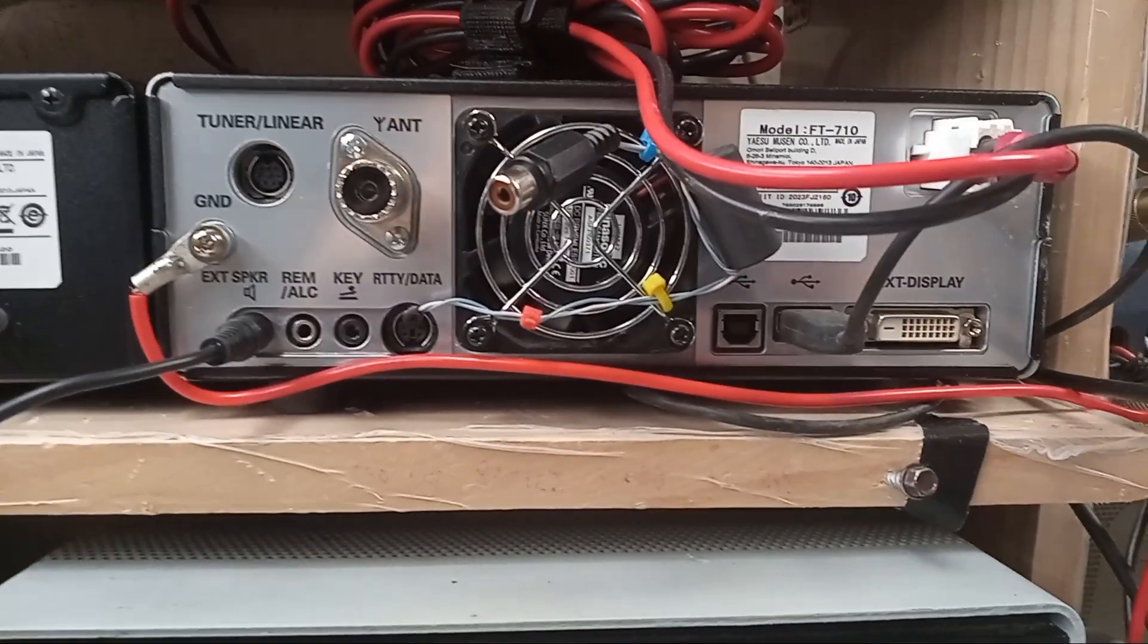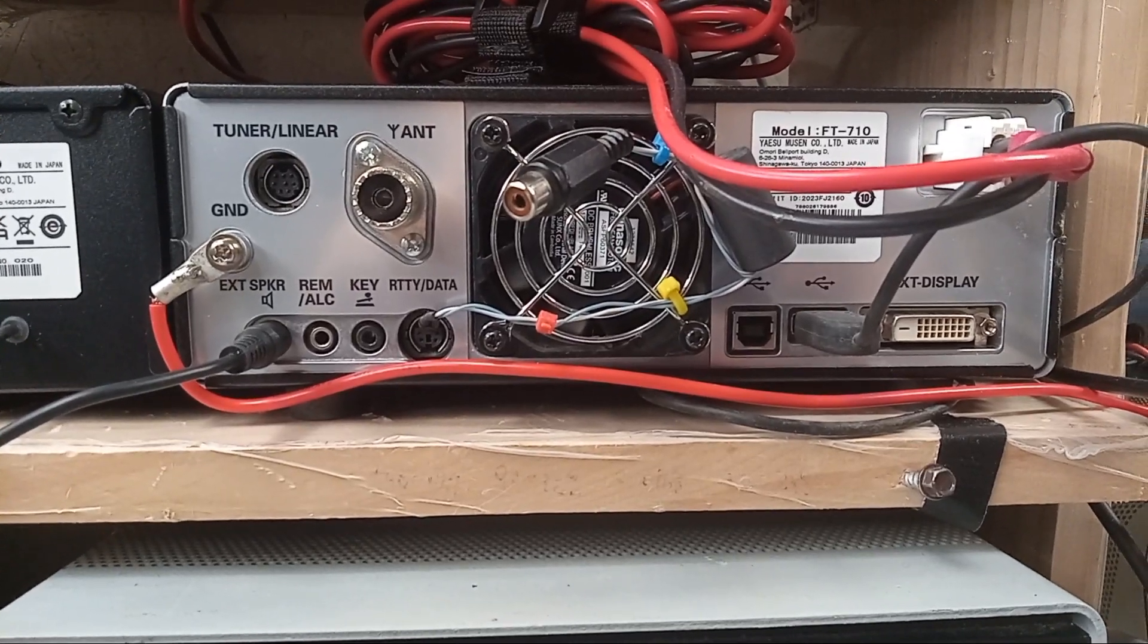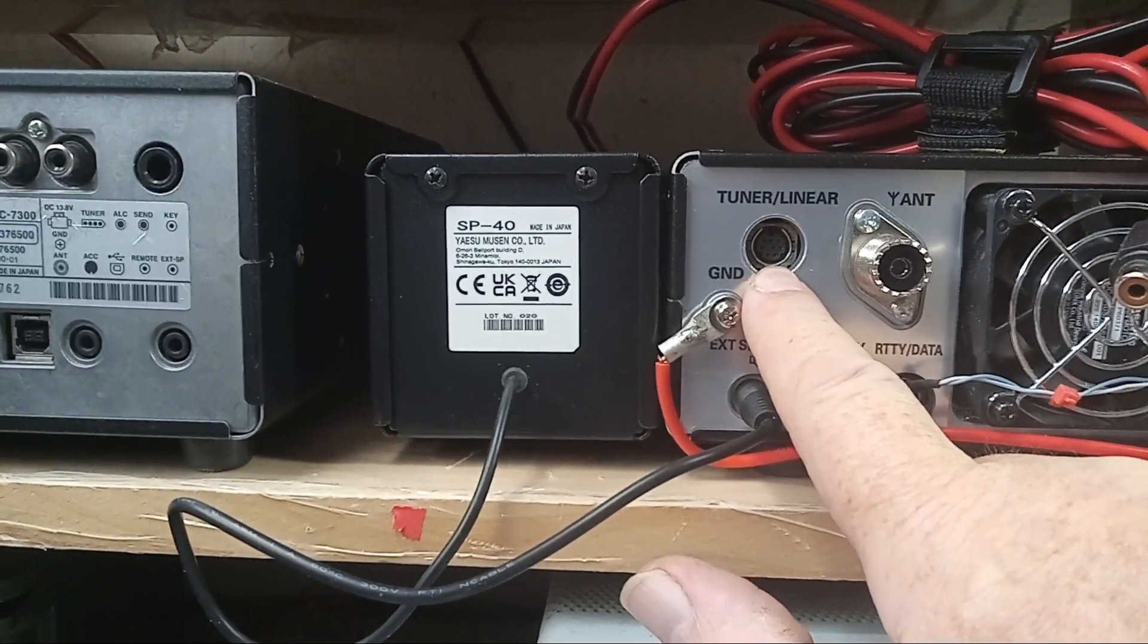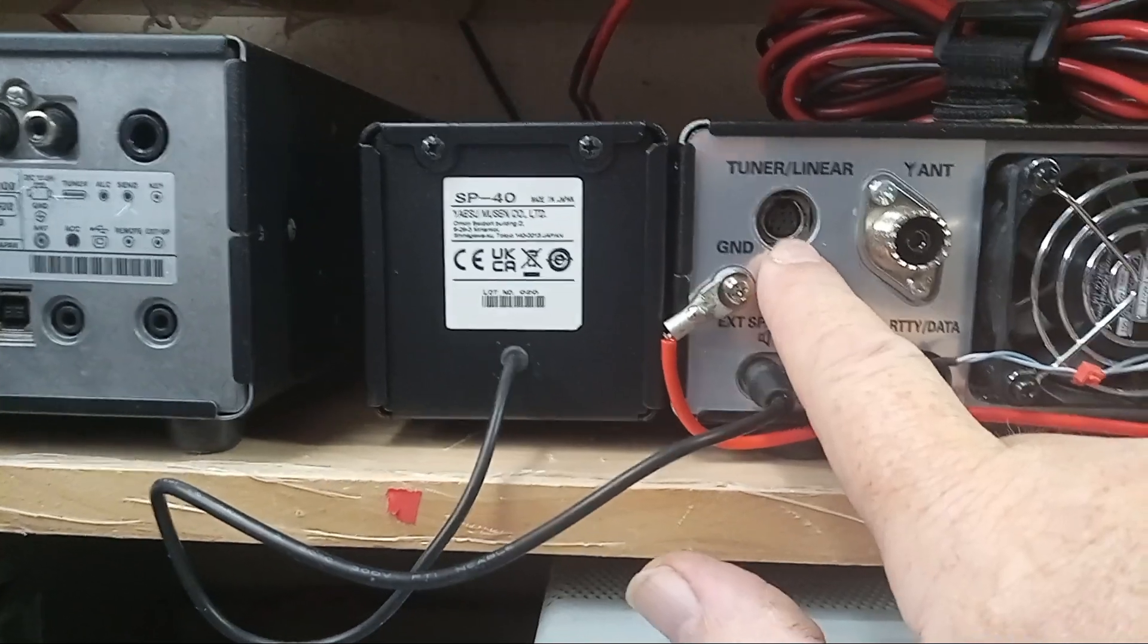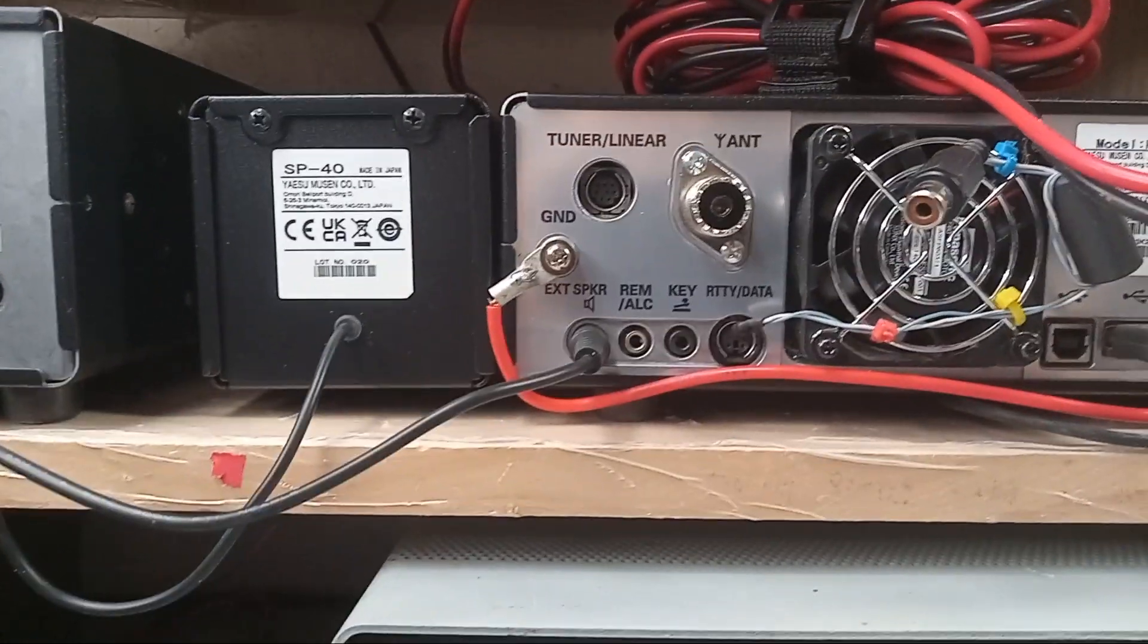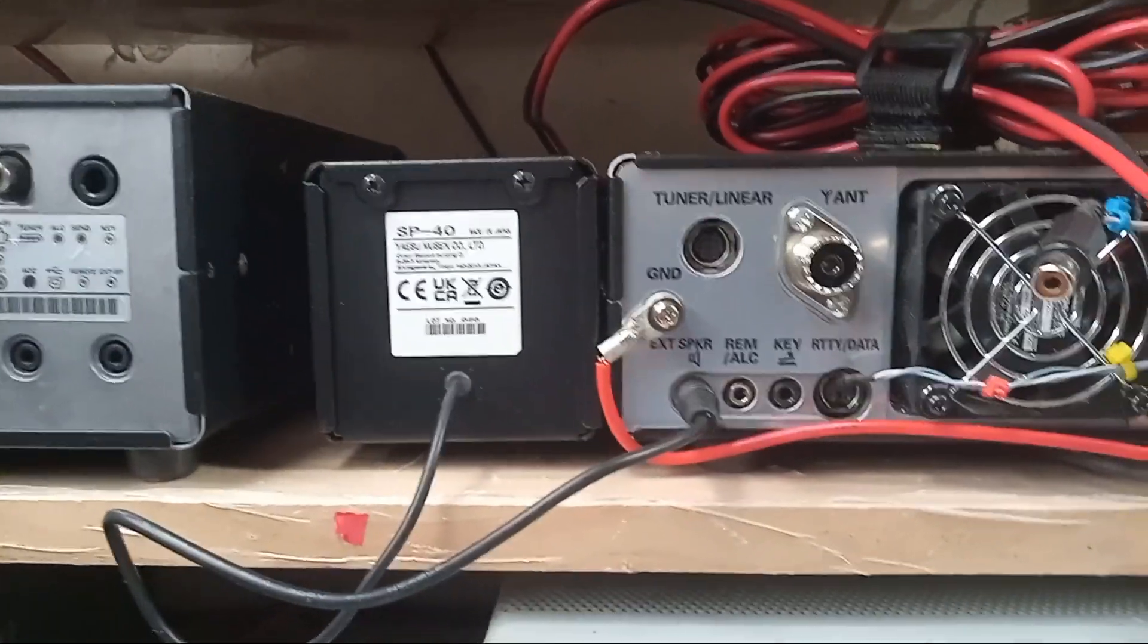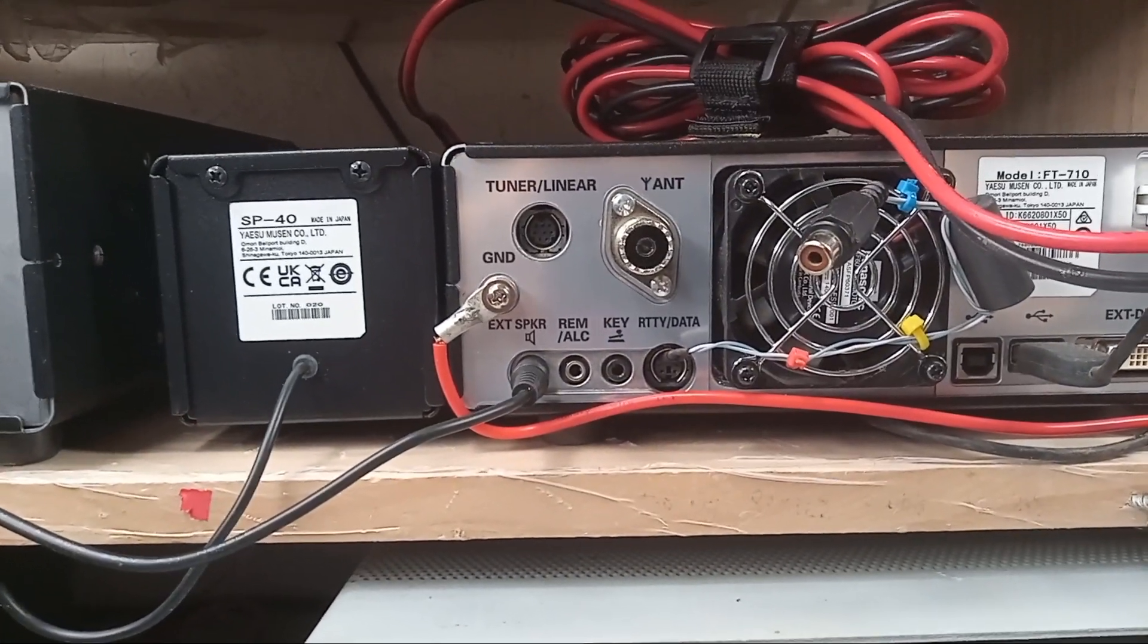Alright, here's the backside of my Yaesu FT-710. Notice that jack there which says tuner or linear. I also have an FC-40 remote antenna tuner and there's a control cable that plugs into that and goes to the tuner. But if I don't want to use the tuner, instead I can connect an external amplifier to it.